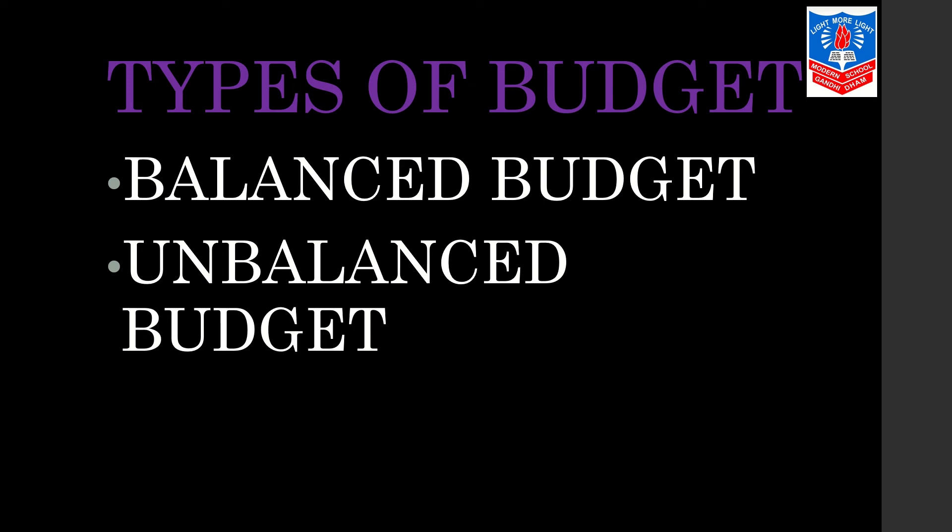By the double entry bookkeeping system, which you all know, all budgets are balanced in principle. The credit — that is the income side — and debit — that is the expenditure side — always balance. According to the double entry book system, income and expenditures are balanced.